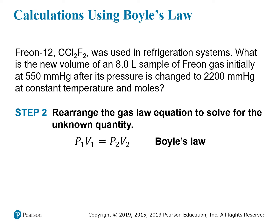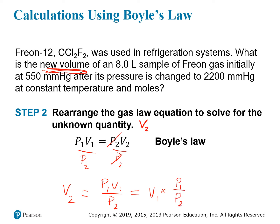To apply Boyle's Law, it's helpful to rearrange it to isolate the unknown quantity — in this case V2. Dividing both sides by P2, we get V2 equals P1 V1 divided by P2. This can also be written as V2 equals V1 times (P1/P2), which helps emphasize that the pressure units must cancel. So the new volume equals the old volume multiplied by a ratio of the two pressures. Make sure your pressure units are the same so they cancel out properly.